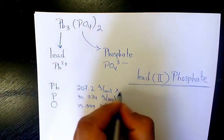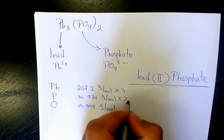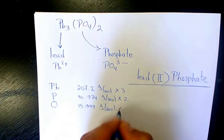So Pb, we have three of them. Phosphorus, two of them. Oxygen, 4 times 2, equals 8.